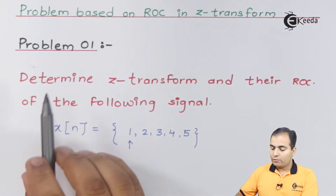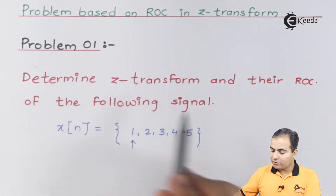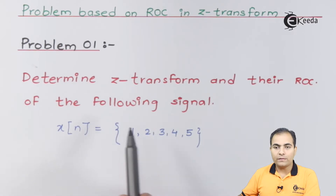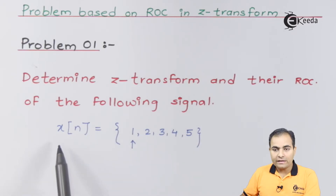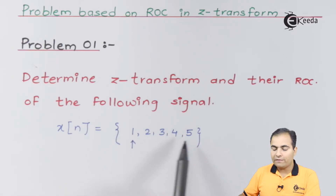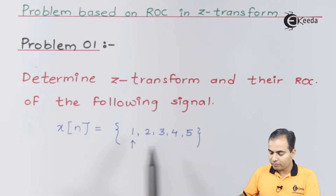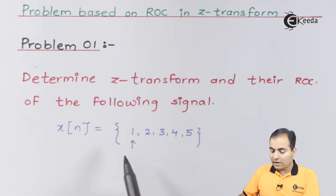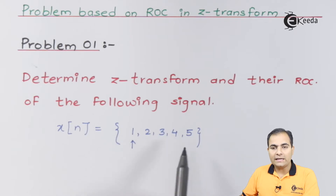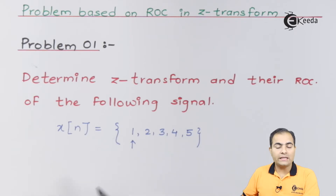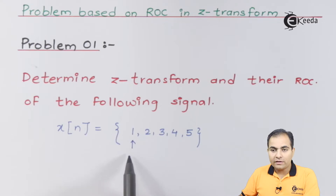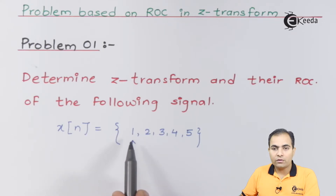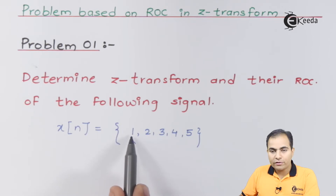Problem number one: determine the Z-transform and the ROC of the following signal. x[n] is given as {1, 2, 3, 4, 5} — these are the amplitudes of the function at each sample instance. The arrow in the notation gives us the idea about the origin; at the origin, the amplitude is one.